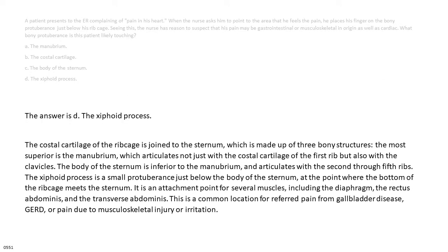The answer is D, the xiphoid process. The costal cartilage of the ribcage is joined to the sternum, which is made up of three bony structures. The most superior is the manubrium, which articulates not just with the costal cartilage of the first rib but also with the clavicles.